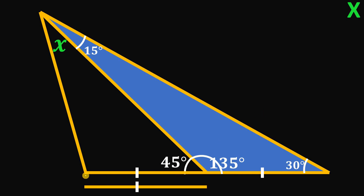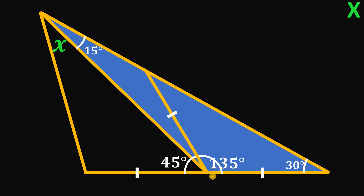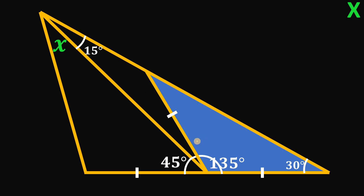Next, we're going to copy this length and create another triangle. This triangle is an isosceles triangle because two sides are equal. In an isosceles triangle the base angles must be the same, therefore this angle must also be equal to 30 degrees.